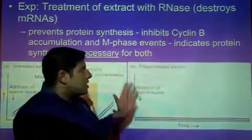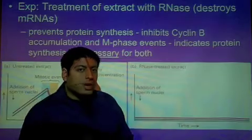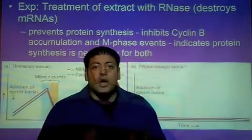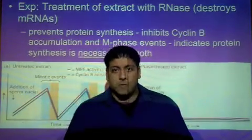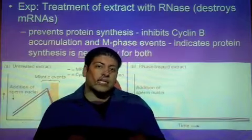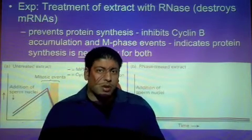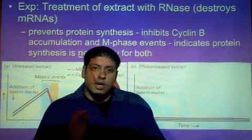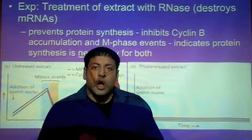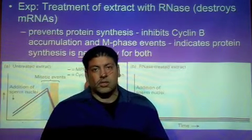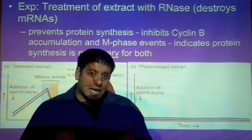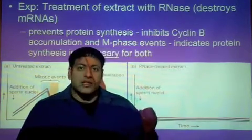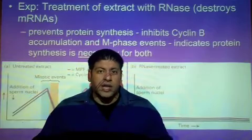In this experiment, we're going to knock out cyclin B protein. The way to knock out cyclin B protein and no other protein is to introduce RNase to the cell.